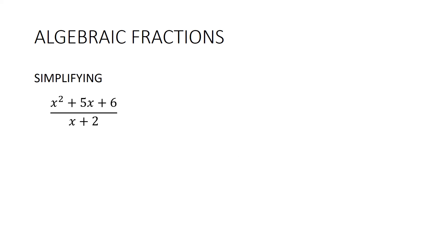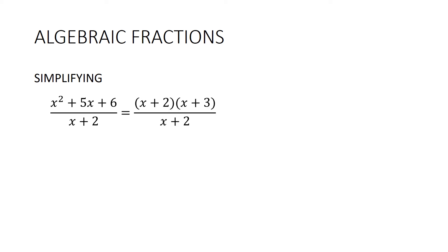Sometimes we get questions like a fraction with a polynomial numerator and denominator. Don't be tempted to cancel x into x across addition — we can't do that because of those pluses, and we can only cancel things that are multiplied. Our only course of action is to factorise. The top factorises as (x+2)(x+3). Now this is a multiplication sign in here, so those (x+2)'s cancel and our answer is (x+3).